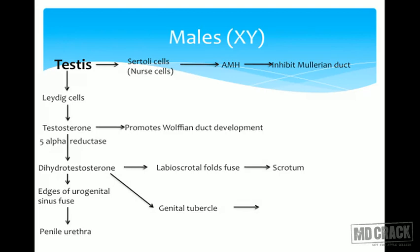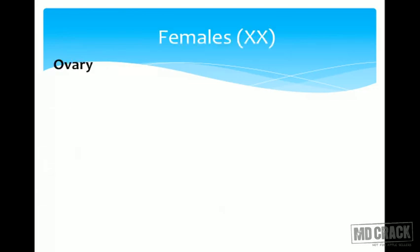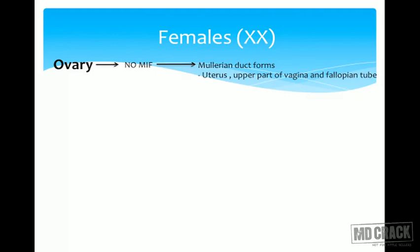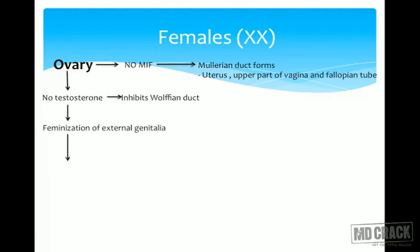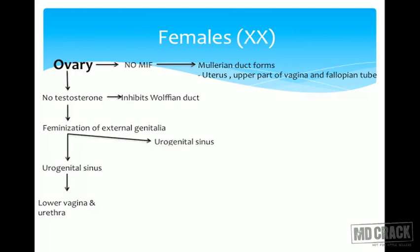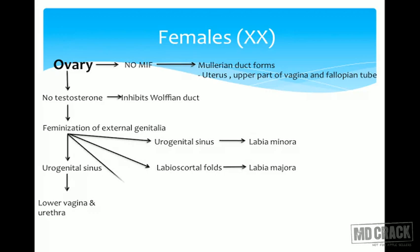The genital tubercle hypertrophies under the influence of DHT, forming the penis. In females with XX chromosomes, the gonad becomes the ovary. With no testes, there is no Müllerian inhibiting substance, so Müllerian ducts form — giving rise to uterus, upper vagina, and fallopian tubes. No testosterone means no Wolffian duct stimulation, so there is feminization of external genitalia: the urogenital sinus forms the lower vagina and urethra, the labioscrotal fold remains open forming labia majora, and the genital tubercle — not hypertrophied — forms the clitoris.